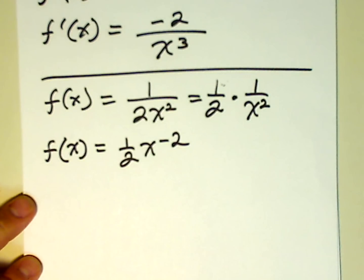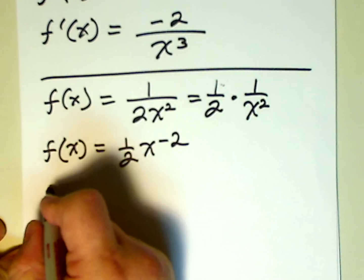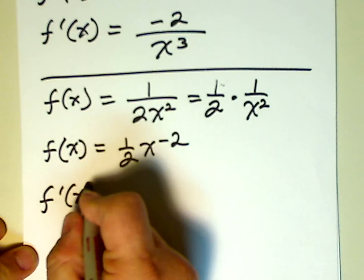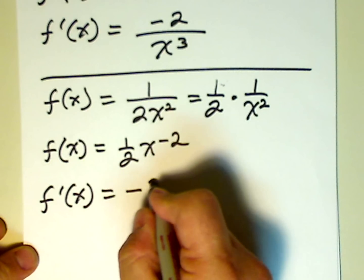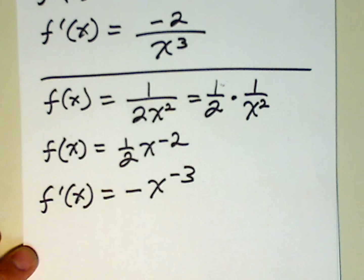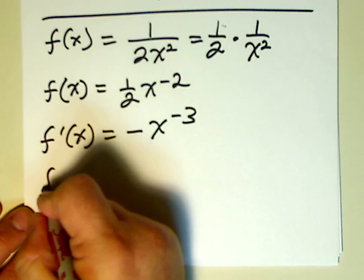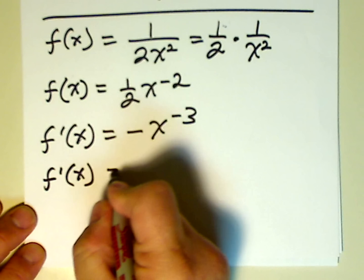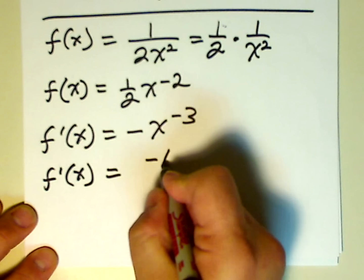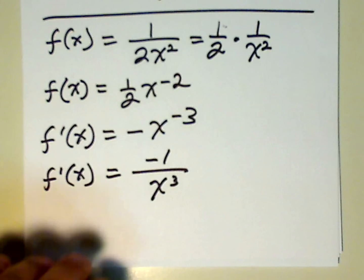And now again, simple power rule problem. Negative 2 times a half is negative 1. So we have f prime of x is equal to negative x to the negative 3, right? We subtract 1 from the exponent. And if we want to write this in fractional form, f prime of x, the derivative, first derivative, is equal to negative 1 over x cubed. That's it. That's all there is to it. Let's look at another problem.